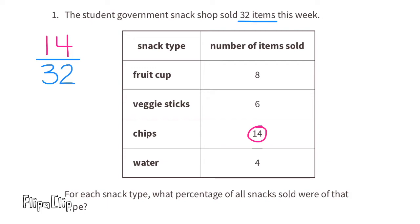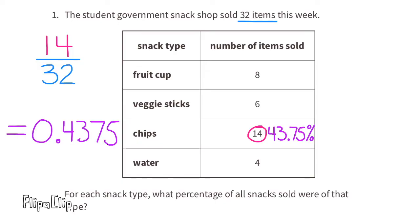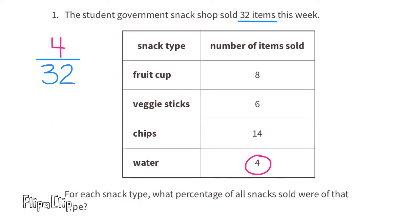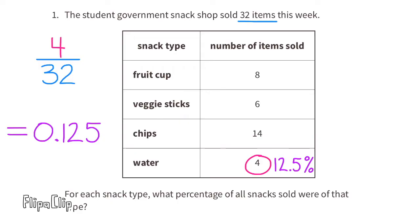Fourteen of the 32 items sold were chips. Fourteen divided by 32 equals 0.4375, which is 43.75 percent. Four of the 32 items sold were water. Four divided by 32 equals 0.125, which is 12.5 percent. So 12.5 percent of the items sold was water.